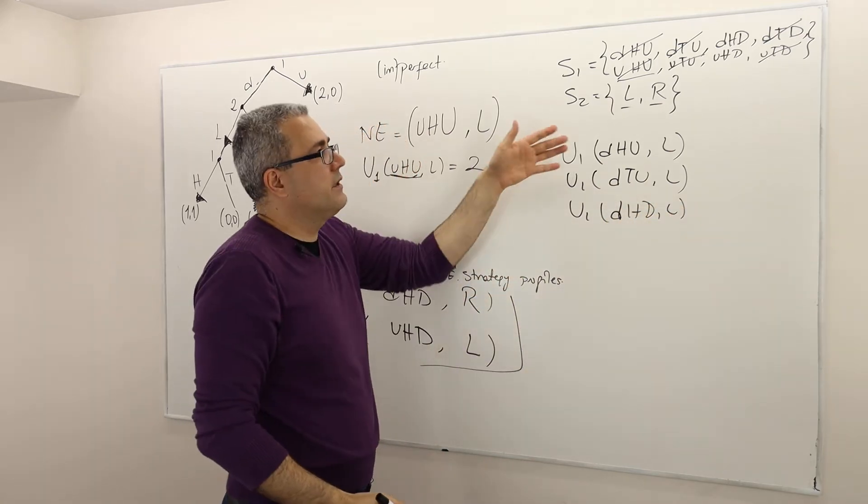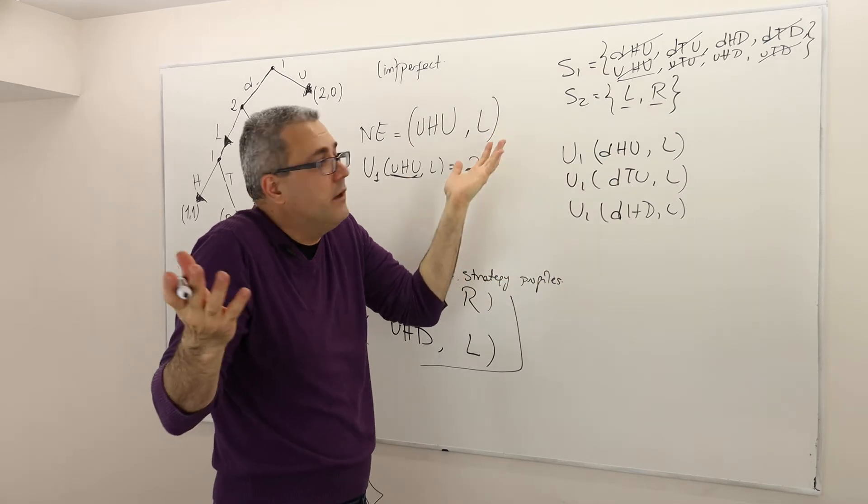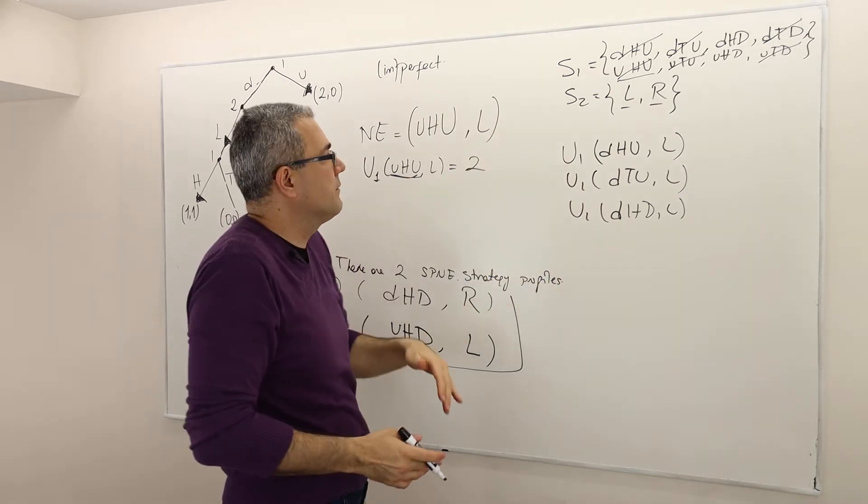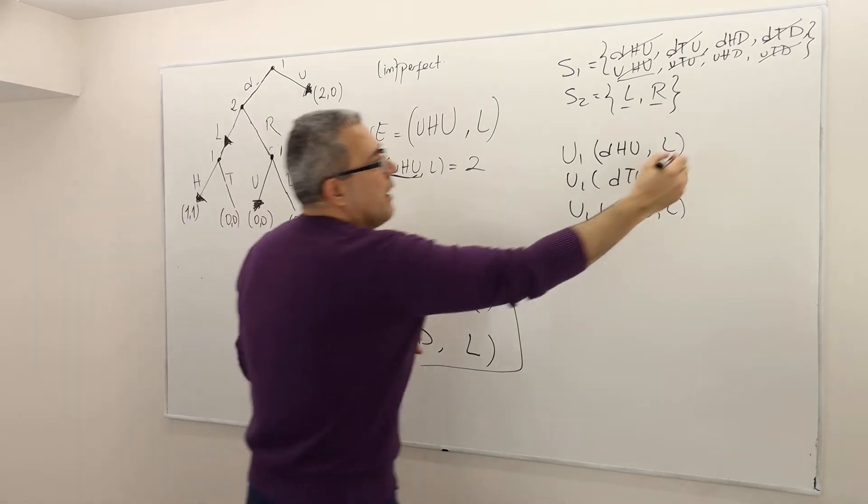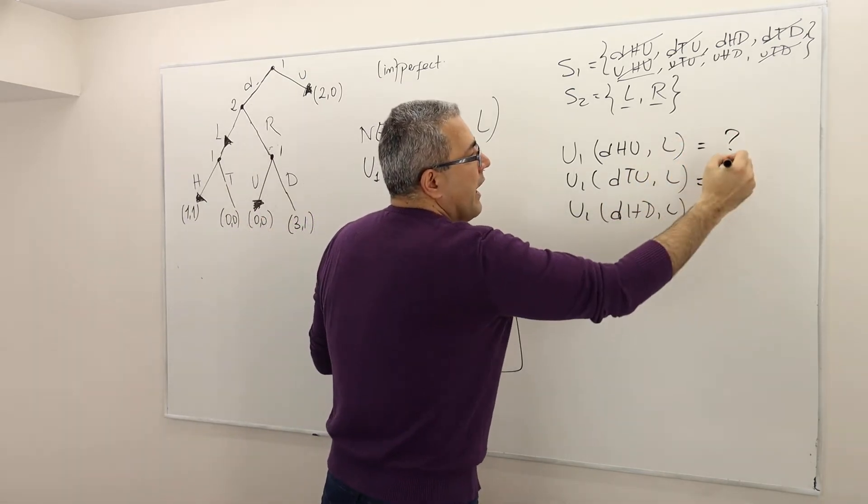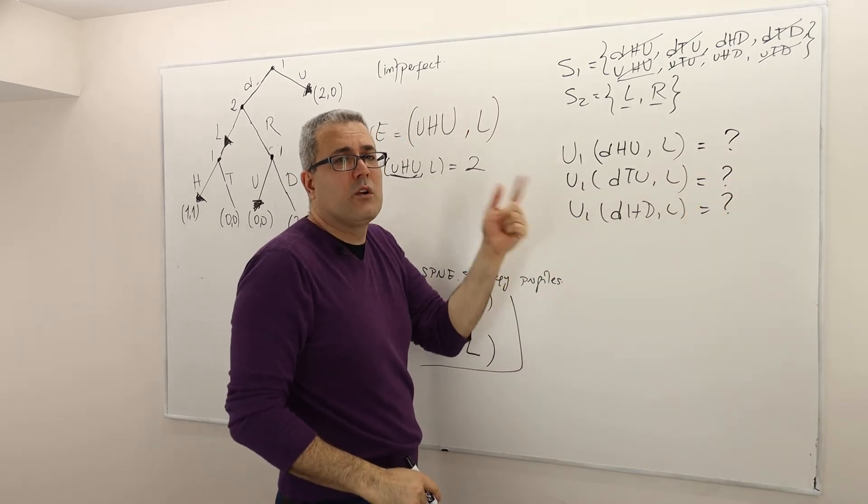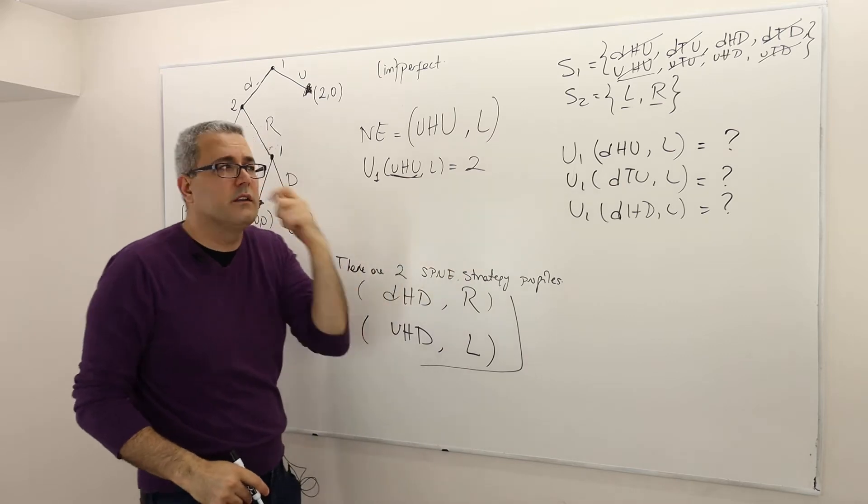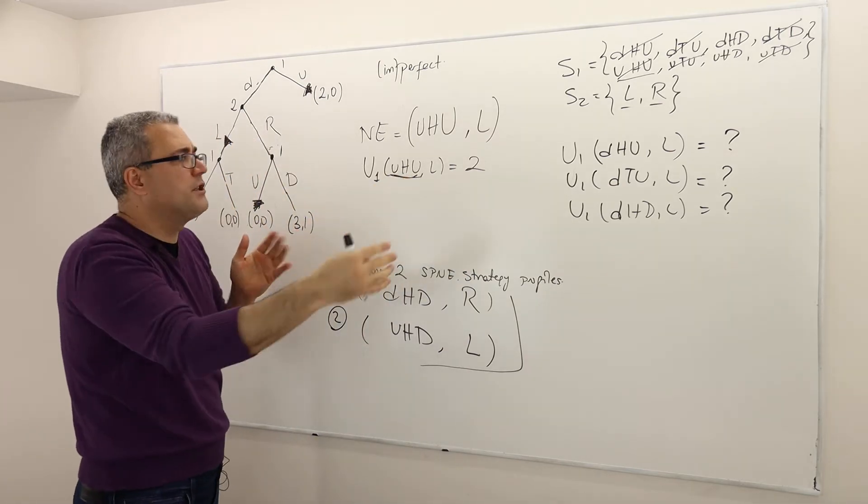I mean, this is a sort of terrible exercise. But it is a correct way of solving this question. But you know what, there's also a smart way of solving this question. Check those payoffs and see that all of them are either equal to two or less than two. They are never higher than two. So that means UHU is the best response to L.